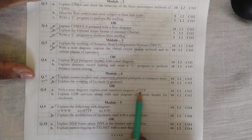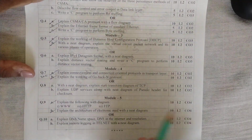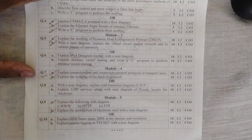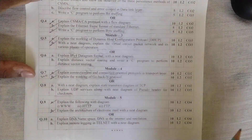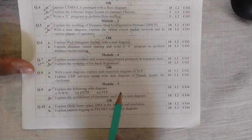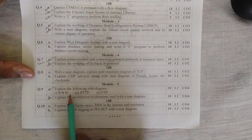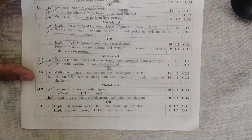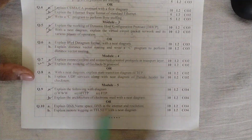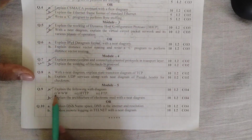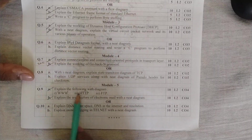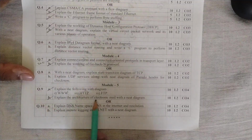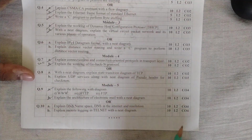Question 8A asked to explain the state transition diagram of TCP with a neat diagram — also given in my passing package. Question 8B asked to explain UDP services with the pseudo header and checksum diagram — the exact same question from my passing package without a single word changed. Question 9A asked to explain three things: WWW (World Wide Web) with its diagram, HTTP (Hypertext Transfer Protocol), and FTP (File Transfer Protocol) — this is where I felt short of time and could only attempt half of both questions. Question 9B asked to explain the architecture of electronic mail with a neat diagram.